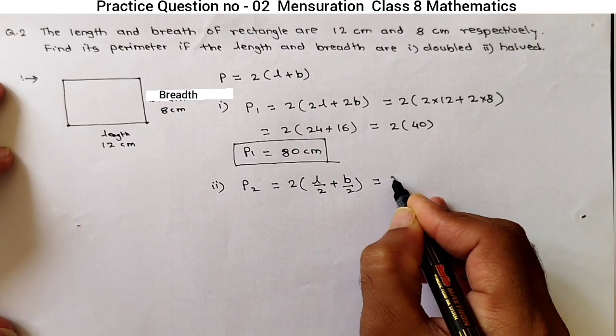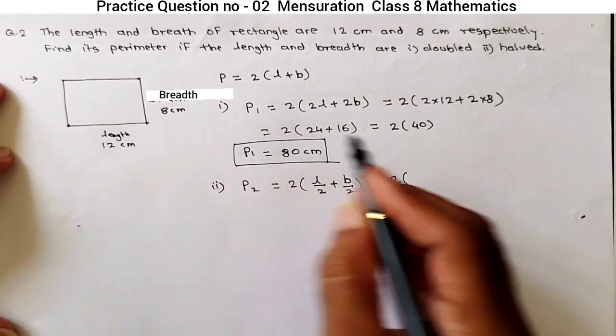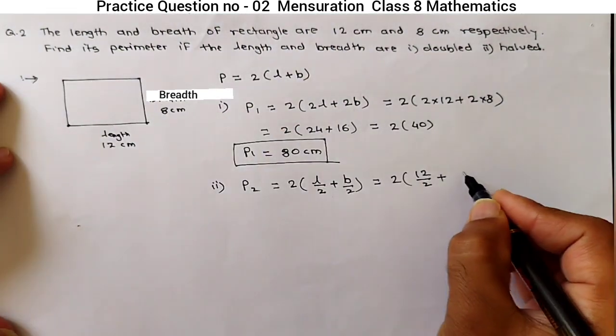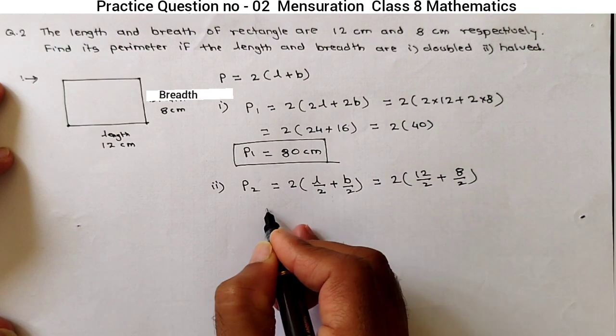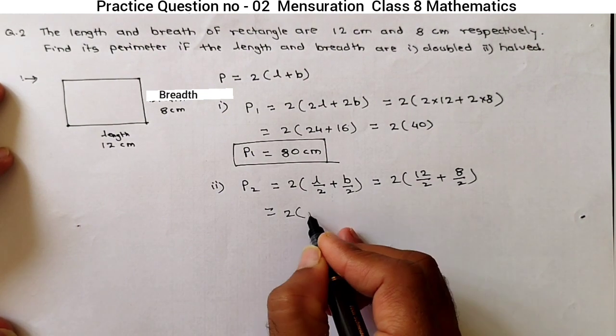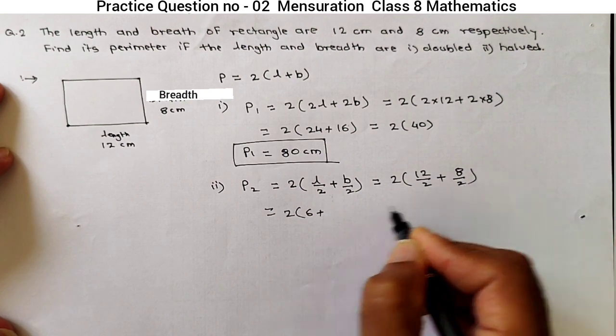Just put the values. 2 into bracket L we know that is 12 cm divided by 2, plus breadth is 8 cm divided by 2. Solve these brackets. 2 into bracket 12 divided by 2 is 6 and 8 divided by 2 is 4.